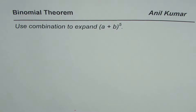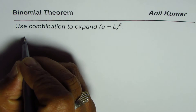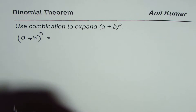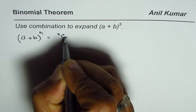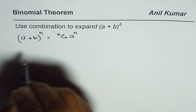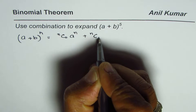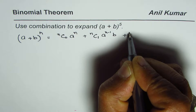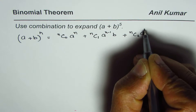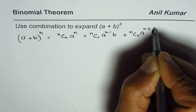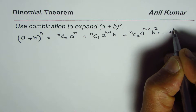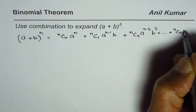I am Anil Kumar and in this video we will learn what binomial theorem is. In general, binomial theorem: (a + b) to the power of n is equal to nC0 times a to the power of n, plus nC1 times a to the power of n minus 1 times b, plus nC2 times a to the power of n minus 2 times b squared, and so on till nCn times b to the power of n.